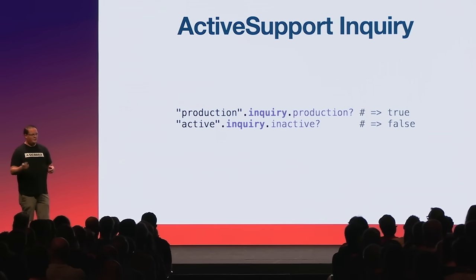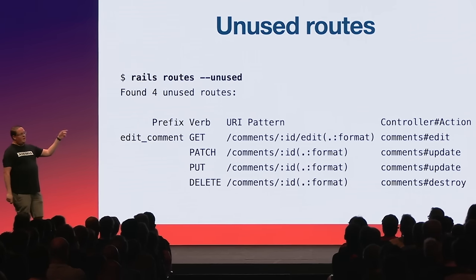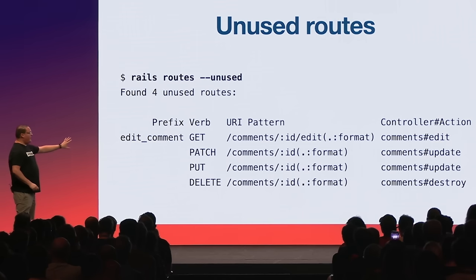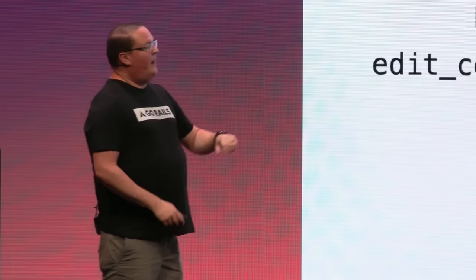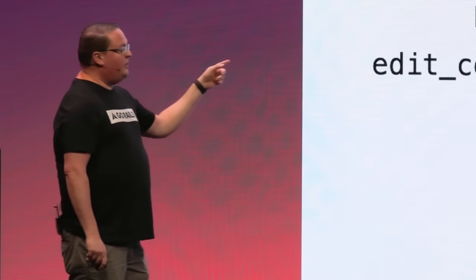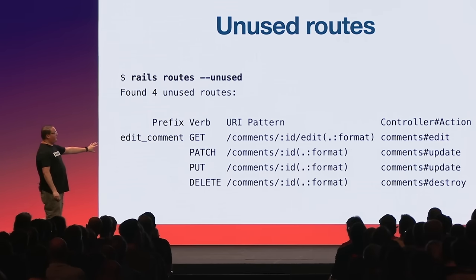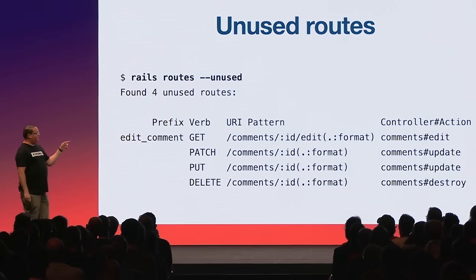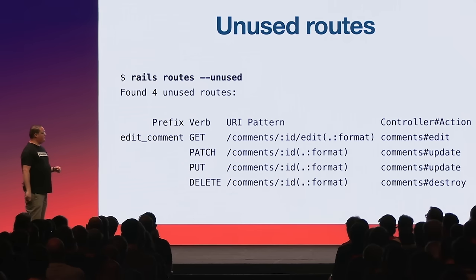Rails 7.1 also ships with an unused routes checker. We're all in the habit of using `resources` routes by default, but sometimes we don't go back and specify only the routes we actually need — resources gives us the full CRUD. You can use `rails routes --unused` to find those mistakes and clean them up. Maybe you meant to implement edit, update, and destroy but didn't, so you realize you should go do that. Or you discover you don't need those routes and can edit the routes file to have `resources` only generate what you need.